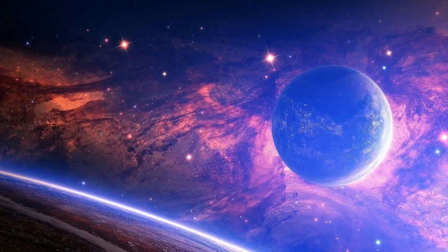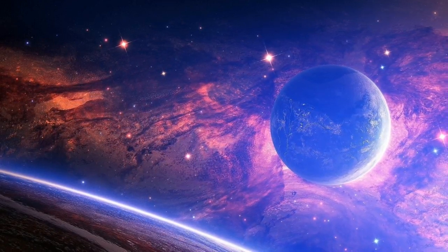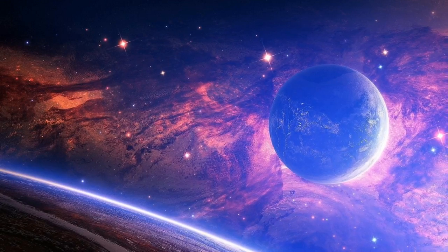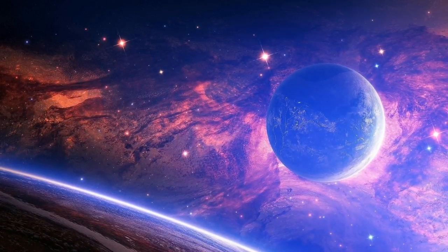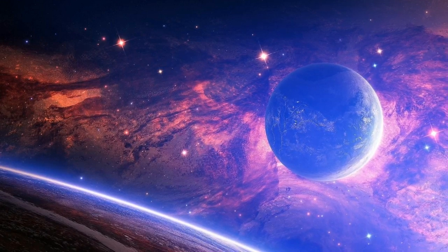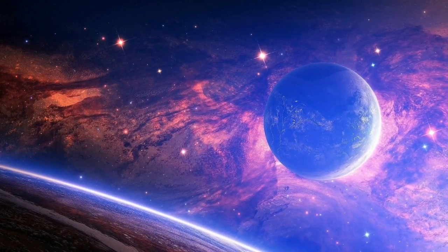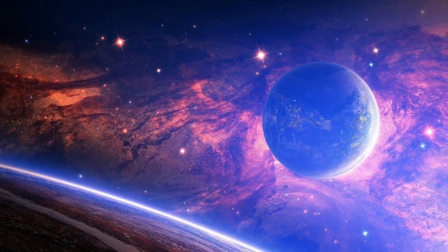Is there a Super-Earth on the edge of our solar system? Astronomers believe they have discovered two of the most distant objects ever found in our solar system. One of the objects could be a Super-Earth located six times farther away than Pluto.